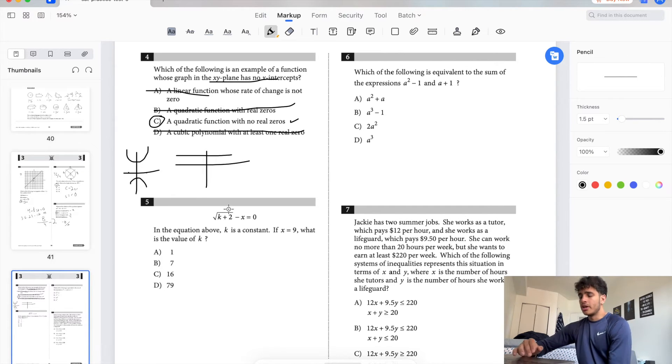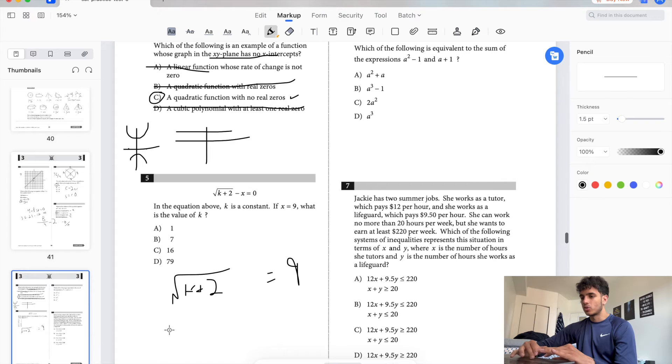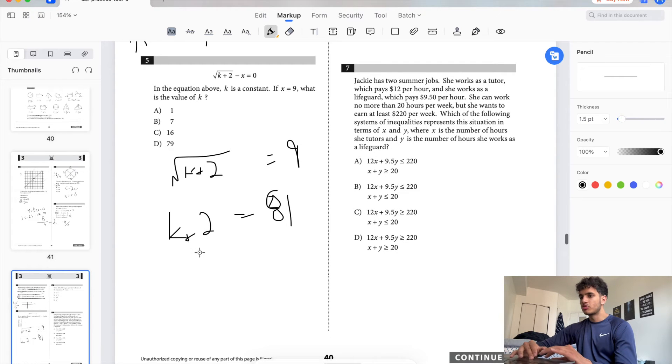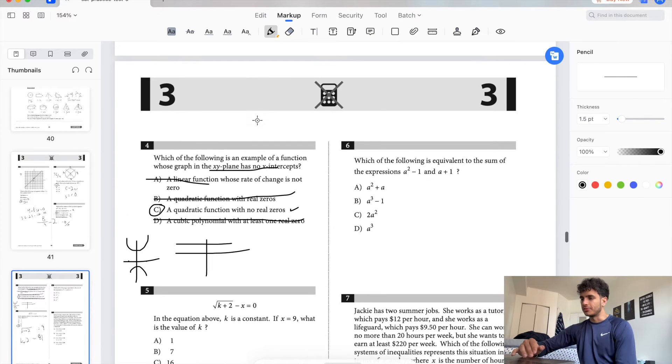In the equation above, k is a constant. If x equals 9, what is the value of k? This is simple stuff. You just plug in and solve. X equals 9 because you add 9 to both sides, then you square both sides, you get k plus 2 equals 81. I literally almost said 9 squared is 36. I've seen 36 and 9 so many times. So subtract 2, you get 79. Pretty simple.